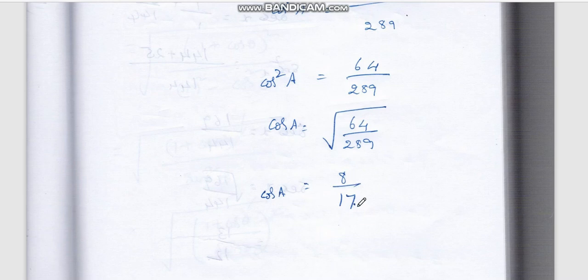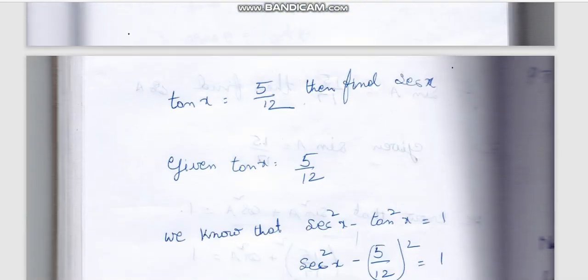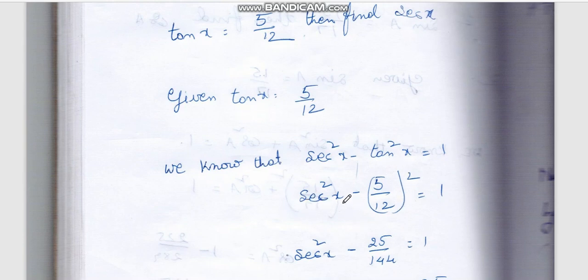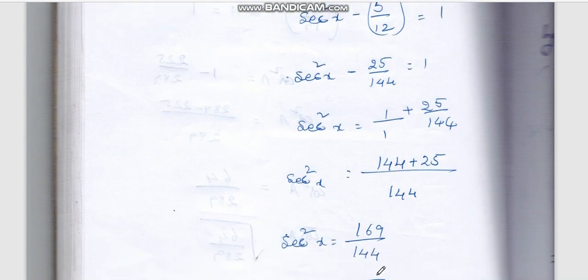The answer is 8/17. Then we find sin divided by cos and we get the trigonometric ratio. Next example: given tan x = 5/12, find sec x. Using the identity sec²x − tan²x = 1, we substitute tan²x = 5/12 whole squared. So sec²x − 25/144 = 1, which gives sec²x = 169/144.